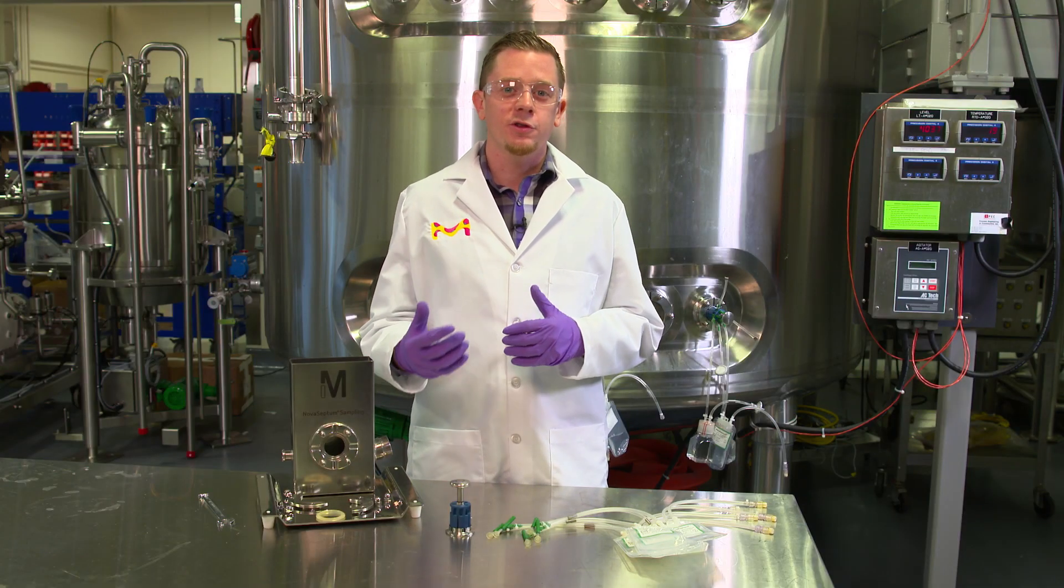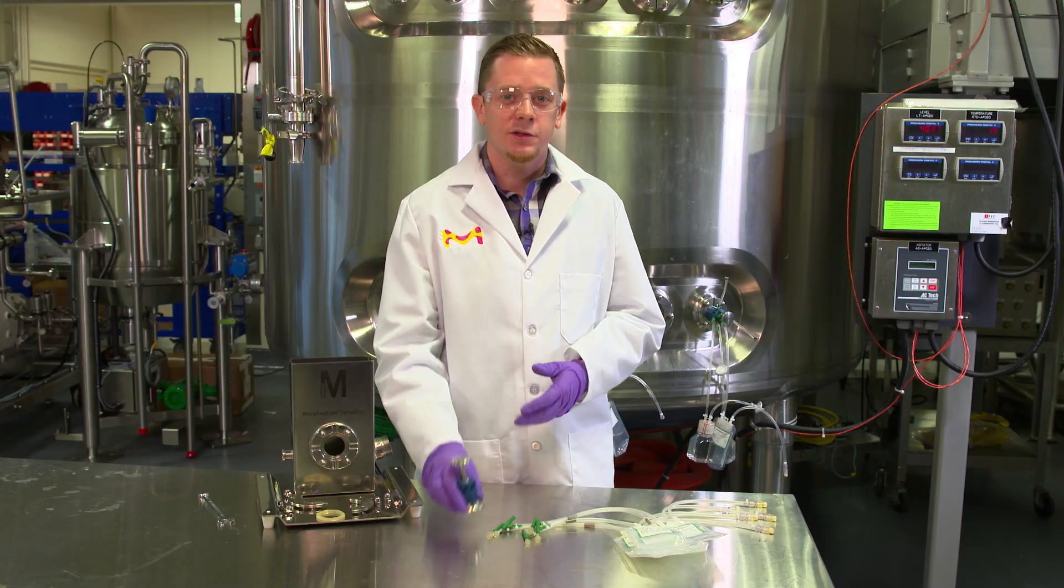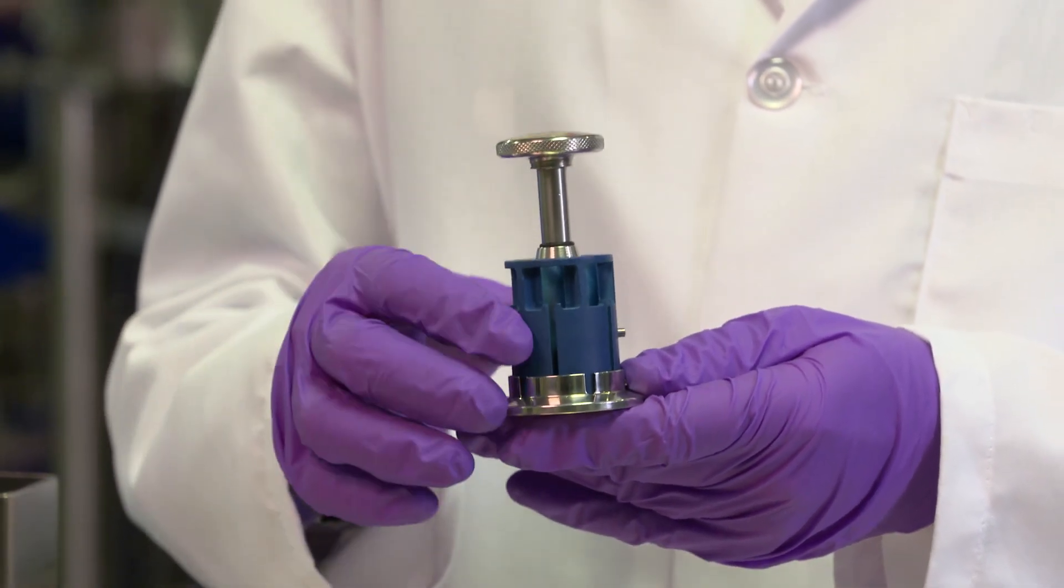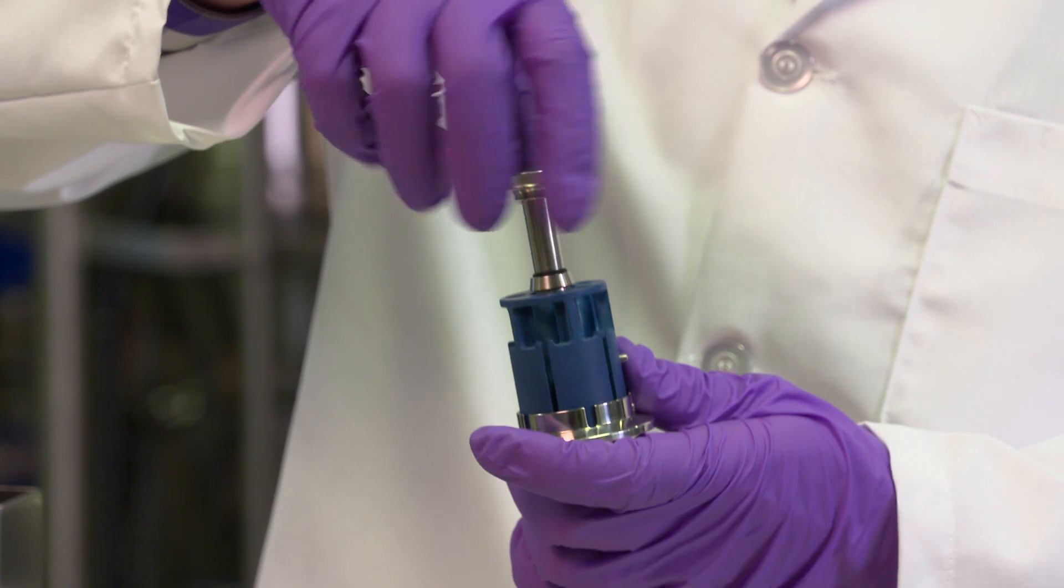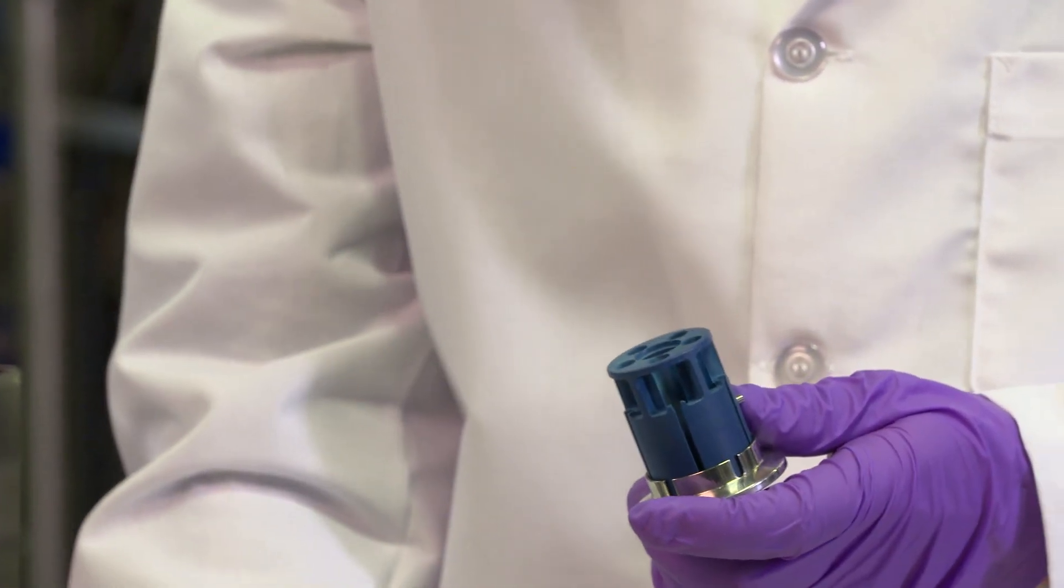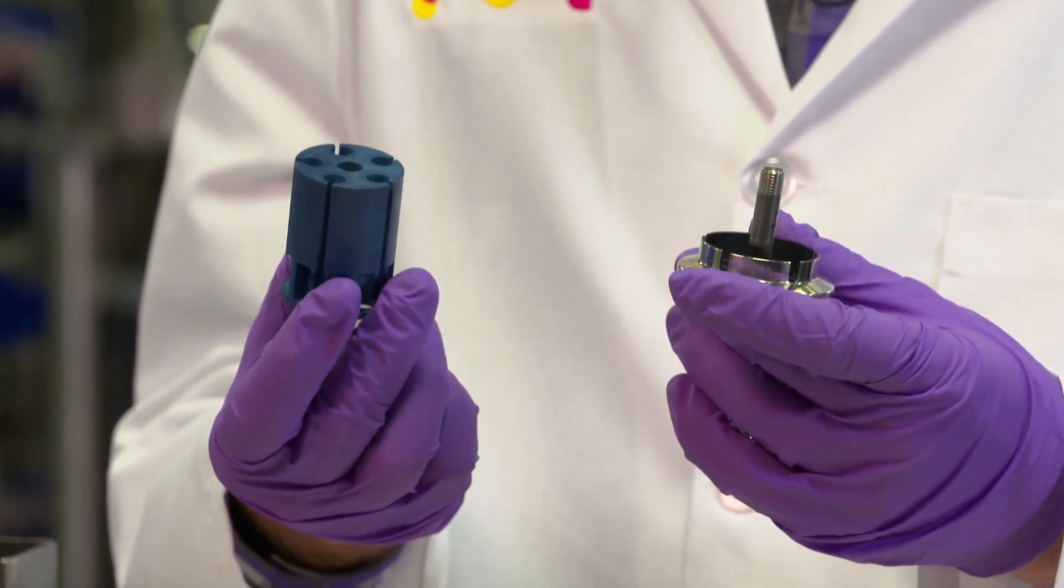So now let me show you how to install a sampling system onto a tank. The first step is to take our holder and disassemble it so that we can install the containers onto it. By unscrewing the locking nut, you can pull apart the magazine and the base.